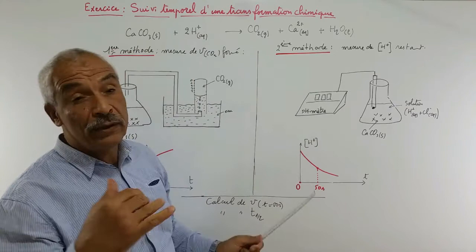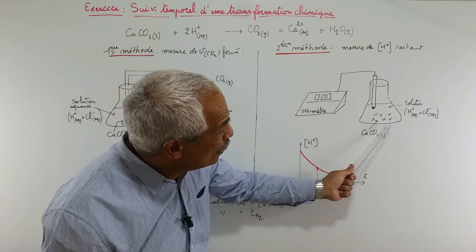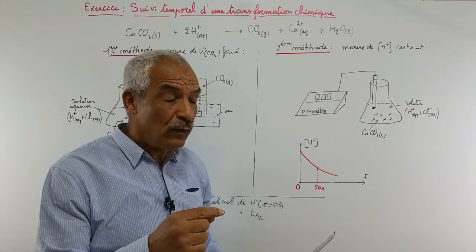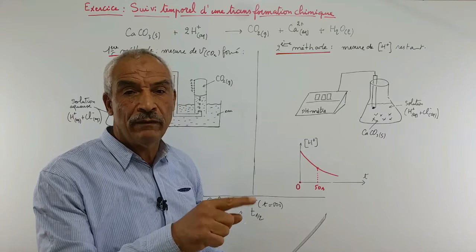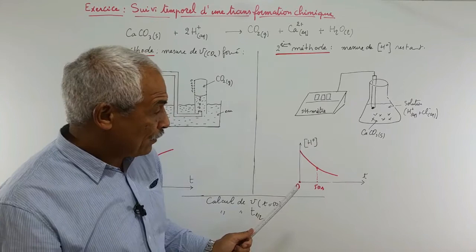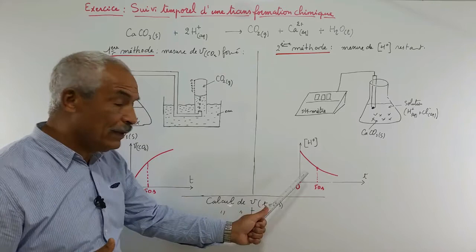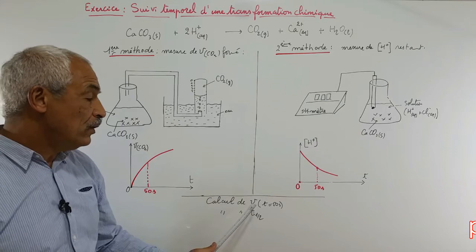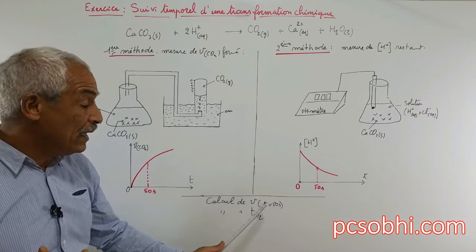La mesure de cette concentration à des instants différents va nous permettre de tracer la courbe concentration de H+ en fonction du temps. C'est une courbe décroissante, c'est normal, parce que c'est un réactif, cette concentration est en train de diminuer. Le volume VS est le volume réactionnel qu'on va utiliser dans l'expression de la vitesse volumique V = (1/VS) × (dx/dt). Pour les deux méthodes, nous allons calculer la vitesse volumique à l'instant T = 50 secondes.